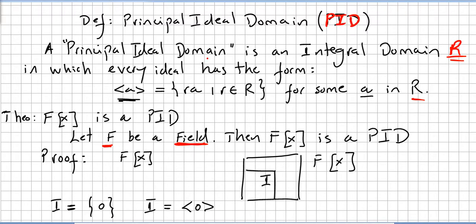A principal ideal domain is an integral domain R in which every ideal has the form RA, where R is in the integral domain and A is an element in the integral domain.